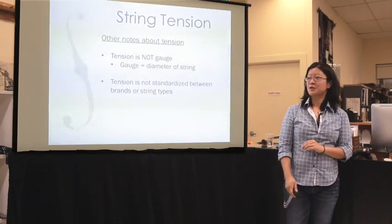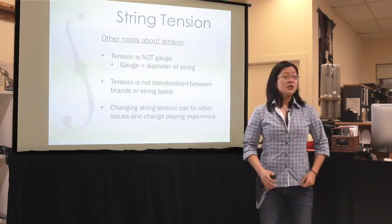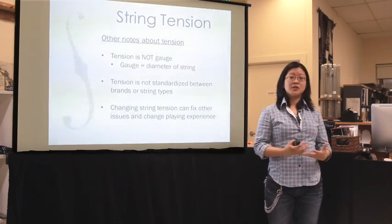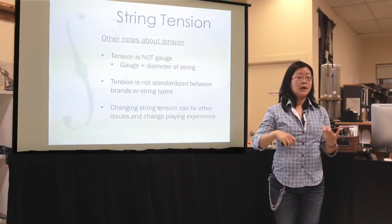A final note on tension: changing string tensions can often address other issues with your instrument or playing experience. For instance, wolf notes on a cello or other instrument are very affected by string tension. You can address a wolf note by lowering the string tension — you might not fix it 100%, but it helps.